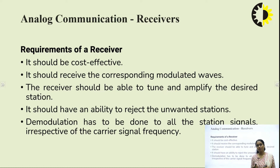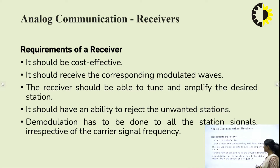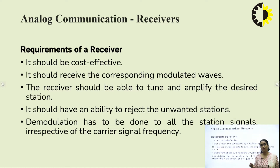In an analog communication system, the receiver is usually at a point geographically separated from the transmitter. In this topic we will study how a receiver works and what the requirements are to make it one of the best and most effective receivers. First of all, it should be cost effective, and it should be capable of receiving the corresponding modulated signal, since after modulation only we transmit the signal.